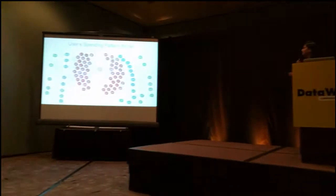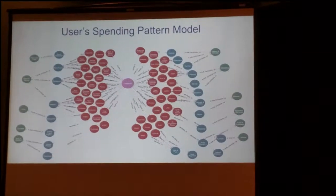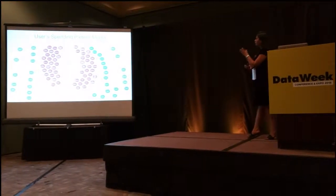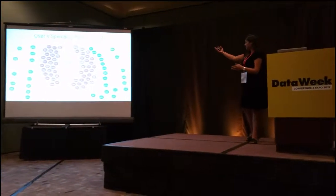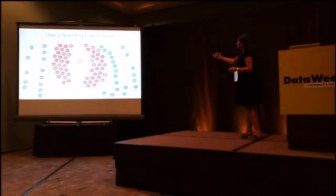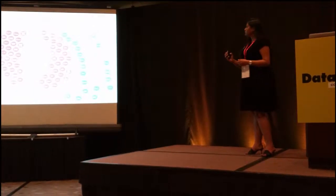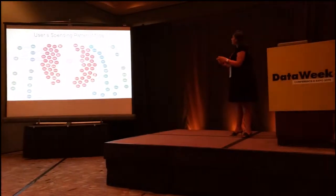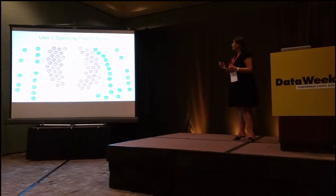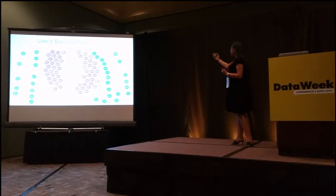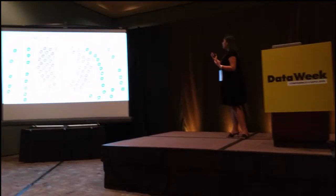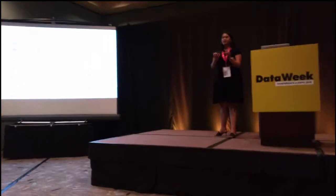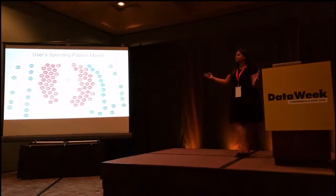As discussed earlier, every financial transaction can be further classified into different categories and subcategories. The pink node is the user, merchants are the red nodes, and there are new nodes denoting subcategories. For example, iTunes is a music service, and music service can be extended into a parent class which is entertainment. Parent categories include shopping, health and fitness, entertainment, auto transport, and home. The user is in a relationship from the user to that parent category to understand complete spending patterns.